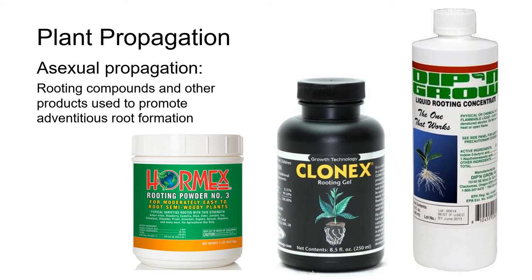Hi everybody. In this unit we're continuing with asexual propagation and cuttings, and we're going to look at the use of rooting compounds which can help speed up the production of adventitious roots. We'll also take a quick look at some other products which are sometimes added to the substrate to improve rooting, and at the end there's a short discussion of the pros and cons of adding fertilizer during the rooting process.